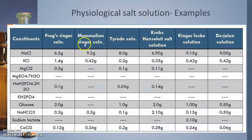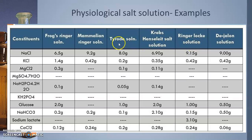The constituents to be added in PSS solution include sodium chloride, calcium chloride, magnesium chloride, magnesium sulfate, sodium dihydrogen phosphate, potassium dihydrogen phosphate, glucose, sodium bicarbonate, and sometimes sodium lactate. The different types of PSS solutions, selected according to the tissue being used, include Ringer's solution, Mammary Elming solution, Tyrode solution, Krebs-Henseleit salt solution, Ringer-Locke salt solution, and Dejong's solution.